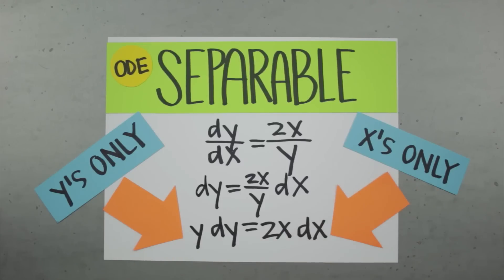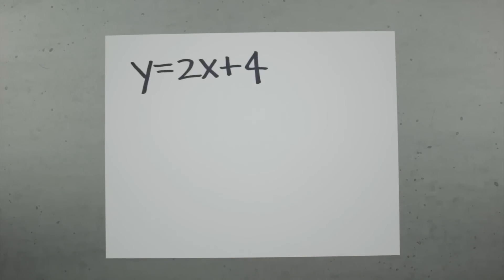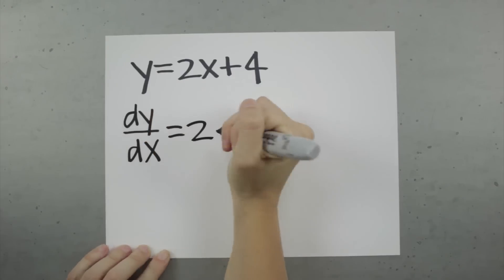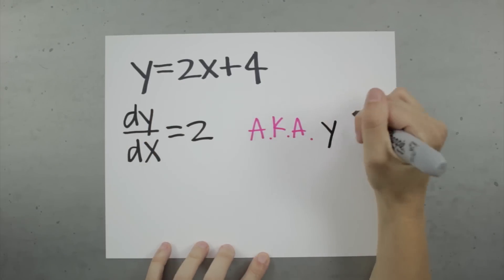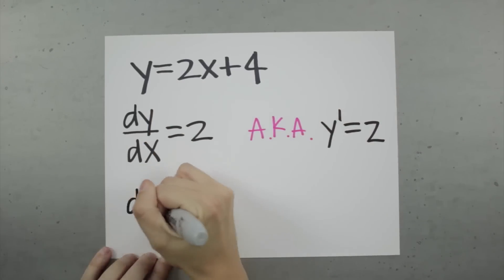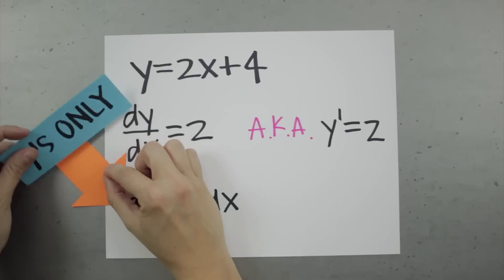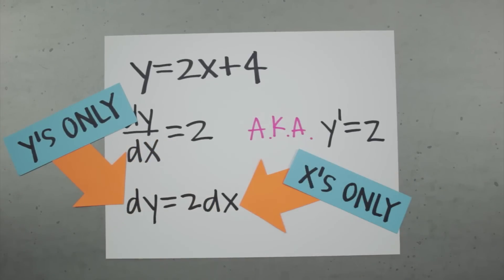By the way, regular derivatives — the ones we learn about in Calc 1 — are really just separable differential equations. Take this single simple variable equation from Calc 1. When you'd take the derivative, you'd get dy over dx equals 2. Then you can multiply both sides by dx, and you've got separated variables, with y's on the left and x's on the right. So even this simple derivative, which is really just the same as y' equals 2, is a separable differential equation.